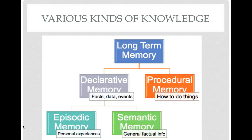Here's a concept map for this unit. Long-term memory can be broken down into declarative memory and procedural memory. Declarative memory is memory for facts, data, and events, whereas procedural memory is more about how to do things. Declarative memory can be further broken down into episodic memories, which are memories for personal experiences, and semantic memories.